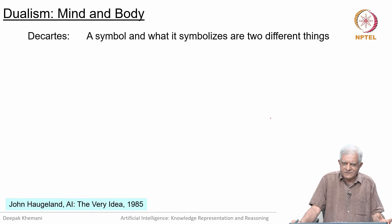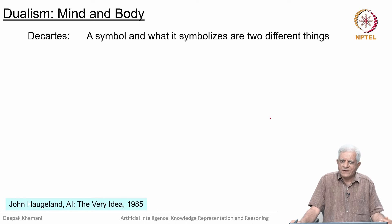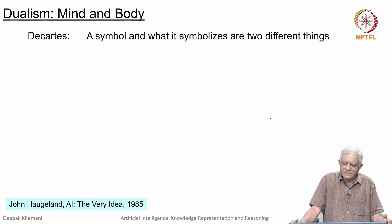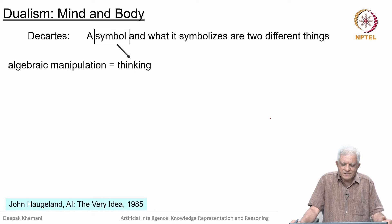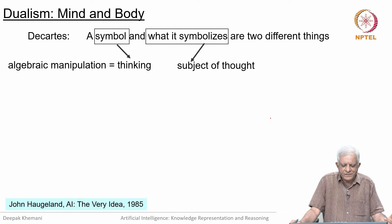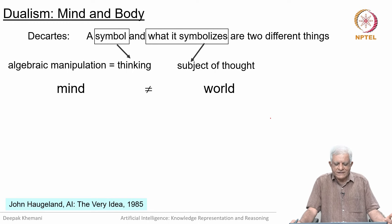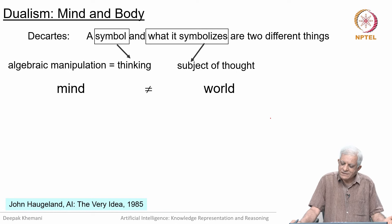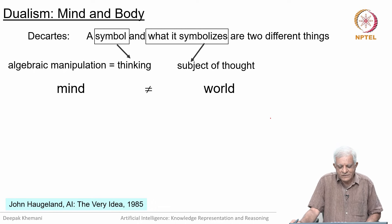What Descartes did was introduce the notion of the mind more explicitly. Copernicus had said what you see is not what is really out there, and Descartes said minds and bodies are different things. A symbol and what it symbolizes are two different things — a symbol is something prone to manipulation, and that manipulation corresponds to thinking, whereas what it symbolizes is the subject of what you are thinking about. Thinking happens in the mind, and what you are thinking about is out there in the real world — they are two different things, the mind is not the same as the world or the body.